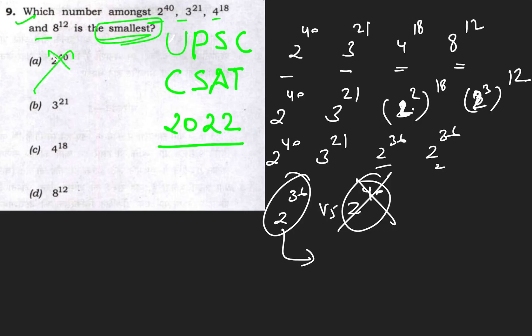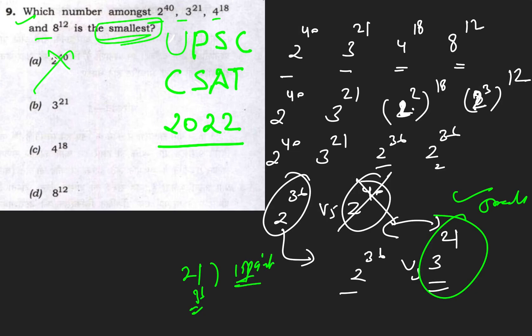You are left with 2^36 and 3^21. By looking at these numbers, you can guess that 3^21 will be smallest. Why? Because 21 and 36 have a 15-point difference in exponents, and 3^21 cannot exceed 2^36.